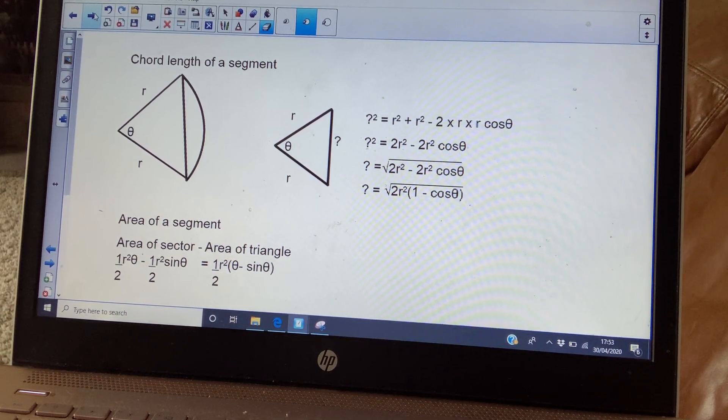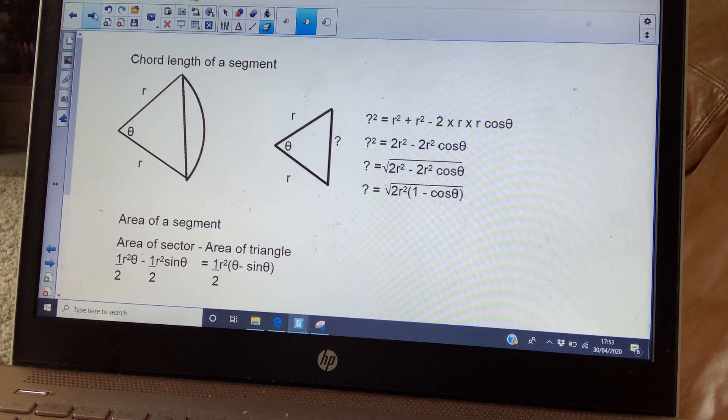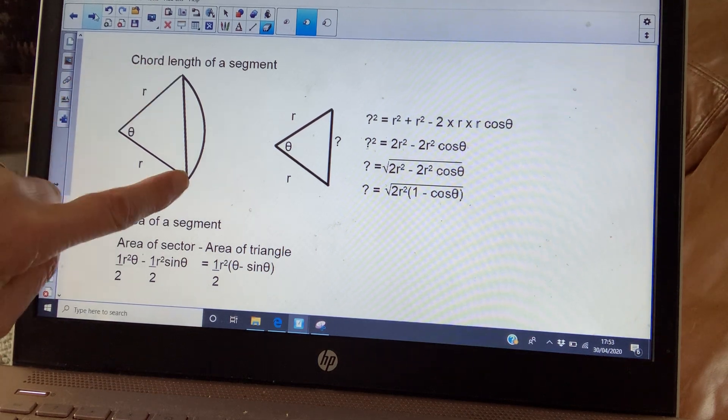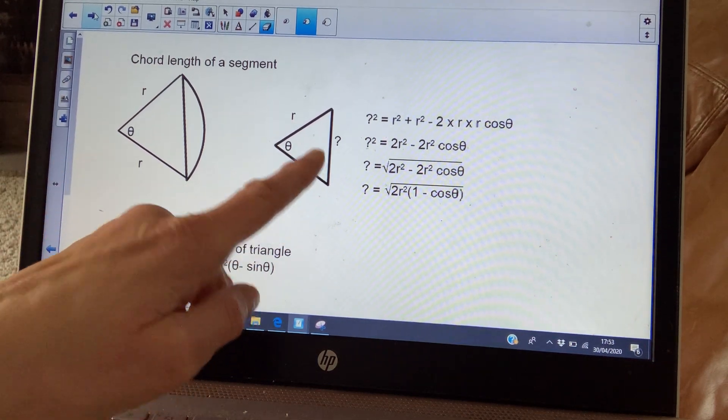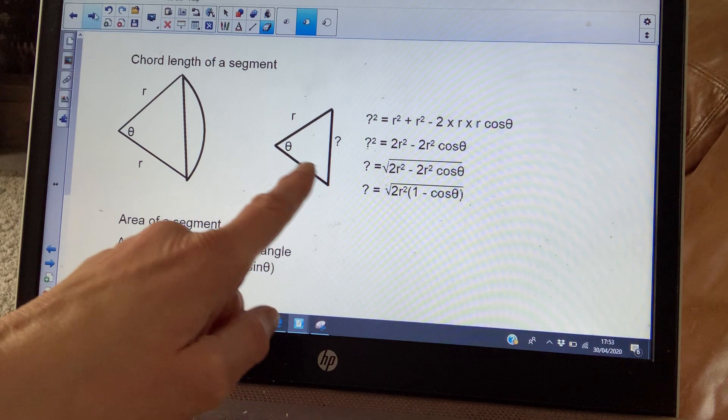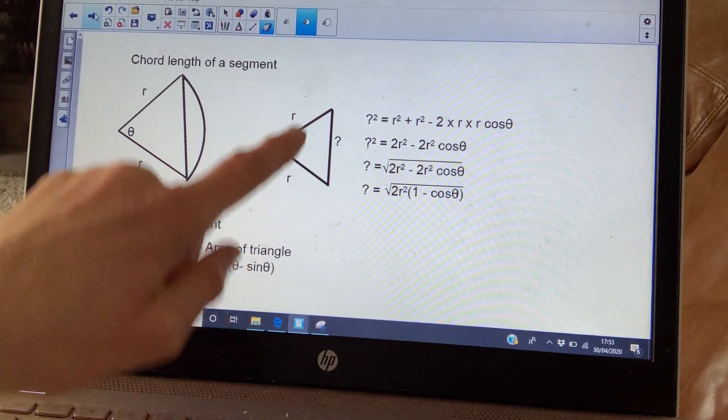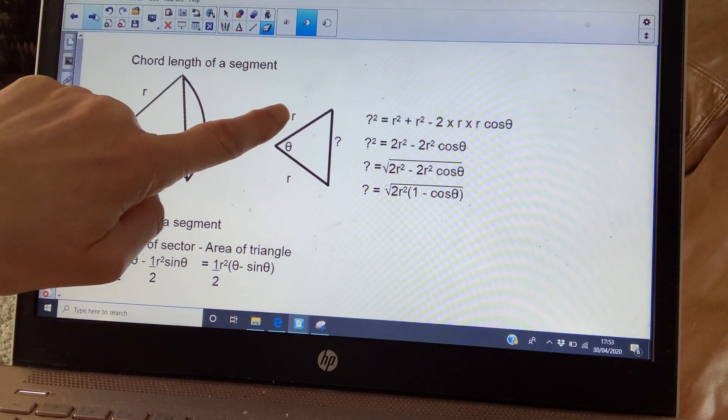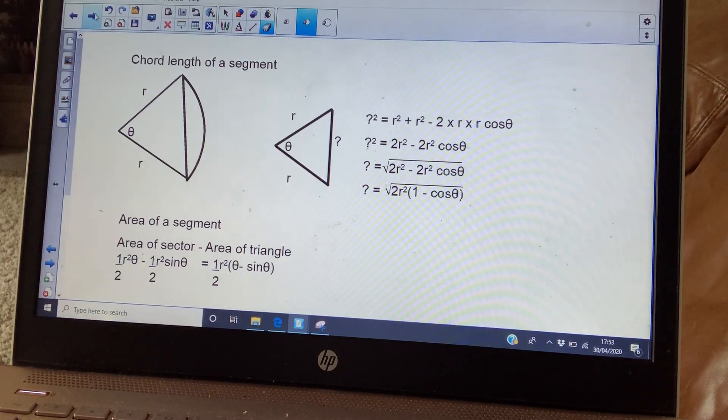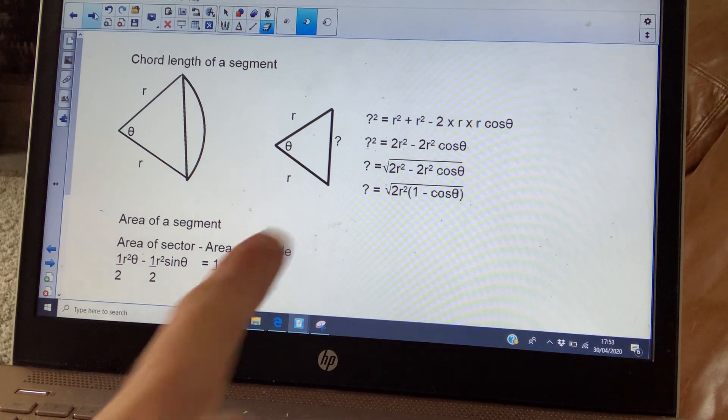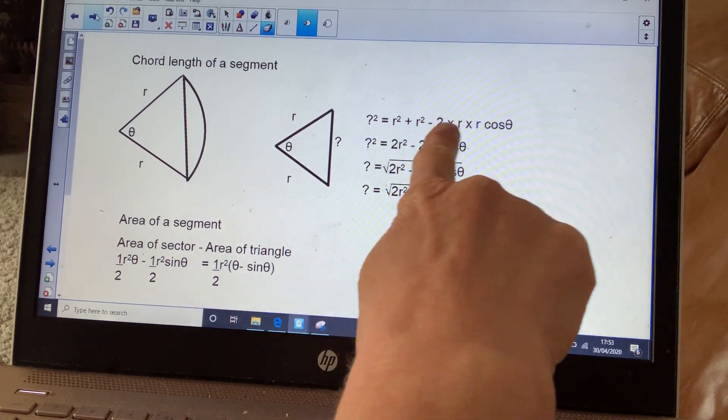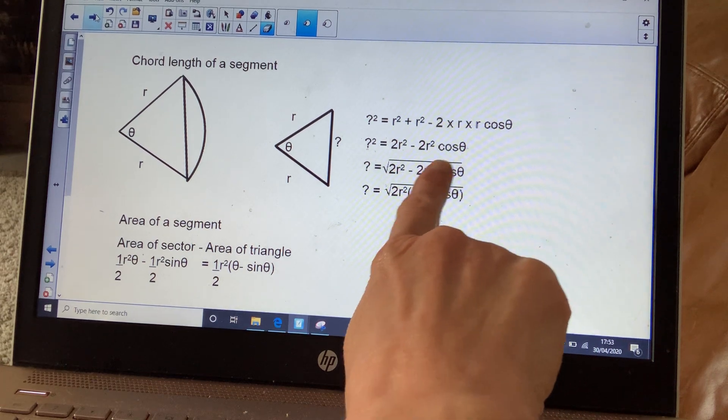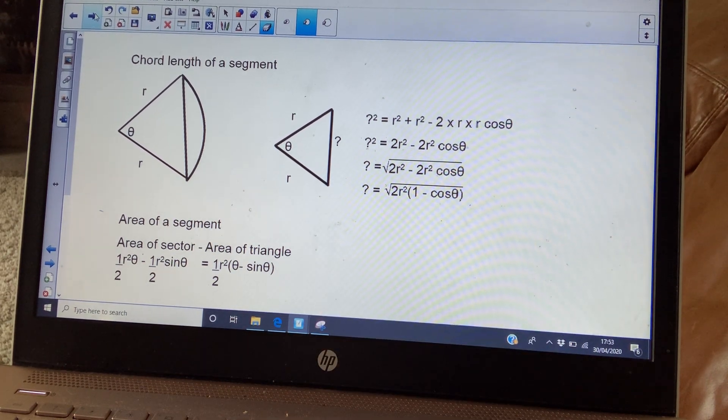And this is how you would get them. So first of all, if you wanted to work out the chord length of a segment, so that distance there, you would just think it's a cosine rule. So you would take out a triangle, label it as we just did here. You've got your lengths, your unknown length R, and your unknown angle there, theta. And you would substitute that into your cosine rule, which would give you that. And then it simplifies.